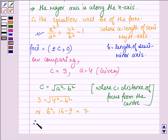Therefore we have b² = 7, and a² = 4² = 16.